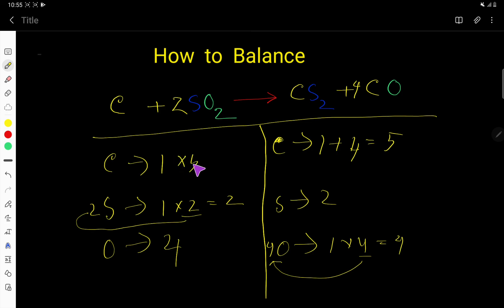To balance carbon, multiply CS₂ by 5, giving us 5. This 5 must come before carbon. Now everything is balanced: carbon 5-5, sulfur 2-2, oxygen 4-4. That's it.